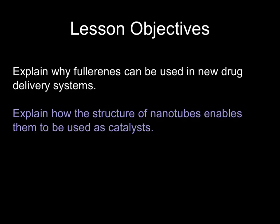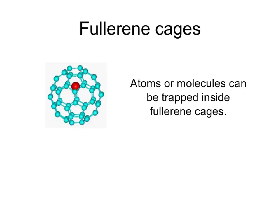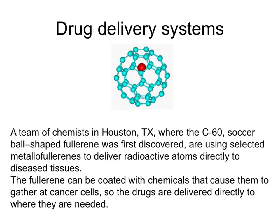Now onto the use of these allotropes of carbon - fullerenes and nanotubes - and relating uses to their structure. Fullerenes like Buckminster fullerene have a ball-like structure that enables atoms or molecules to be trapped inside, like a ball in a cage. Chemists have used these as drug delivery systems - for example, a radioactive atom might be placed inside the ball, the ball coated with a chemical that attracts cancer cells, then injected into the body to deliver a radioactive dose only to those cancer cells. Other drugs might be attached to the outside or inside of the ball and delivered to specific parts of the body.